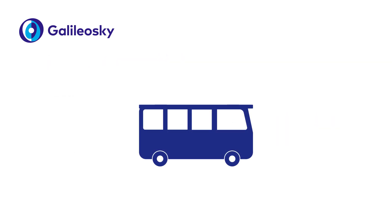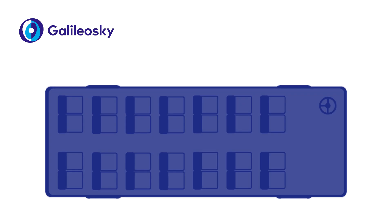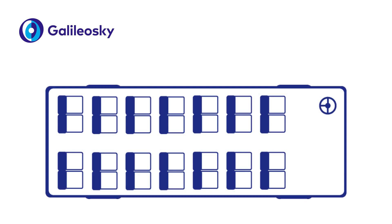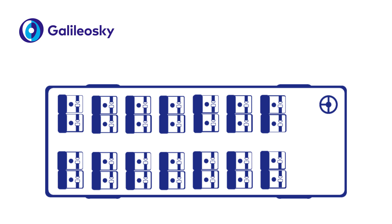Let's look at the following situation. We have a bus with a capacity of 28 passenger seats. Each seat has a presence sensor and a seatbelt fastener sensor. Sensors of one kind in each of the rows form a separate electric chain that uses a number of resistors connected to one discrete analog input.